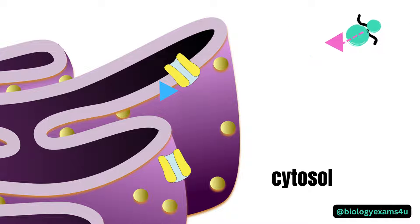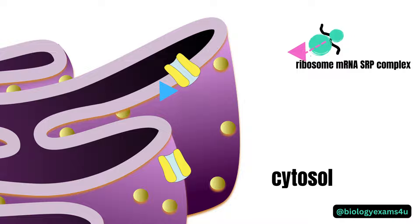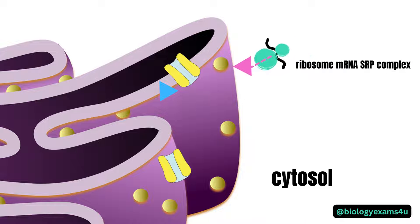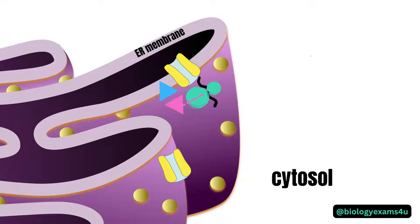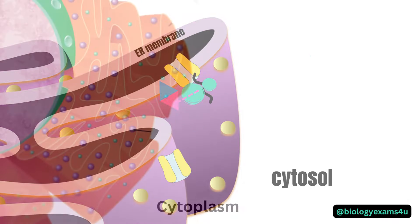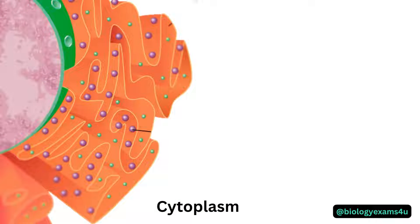Translation of secretory or integral membrane proteins initiates in the cytosol. Then ribosomes containing these mRNAs are recruited to the ER membrane, fuse with the membrane, and finally release the polypeptide into the ER lumen. Let us divide the entire process into simple steps for better understanding.